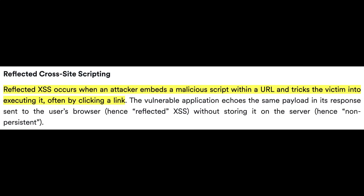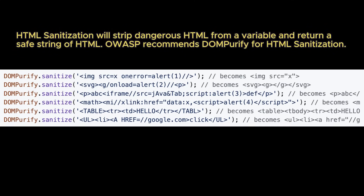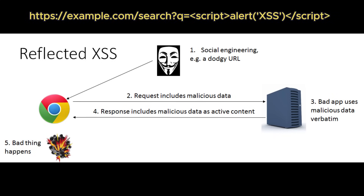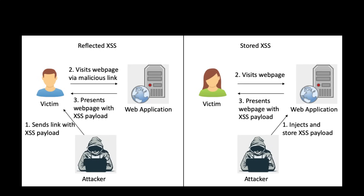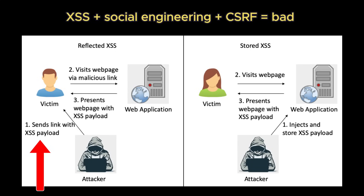Reflected XSS, in contrast, does not persist on the server. It occurs when malicious input, typically included in a URL or form submission, is immediately reflected in the webpage's response without proper sanitization. For example, if a search page displays the search query back in the results, an attacker could craft a URL that executes in the victim's browser. Reflected XSS typically requires the attacker to convince the victim to click a specially crafted link or submit a manipulated form. Despite being transient, reflected XSS can be extremely harmful, especially when combined with social engineering, phishing, or CSRF attacks.